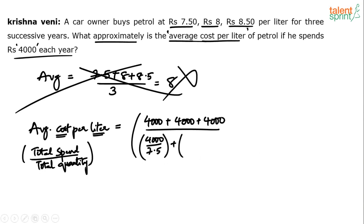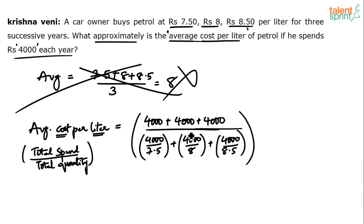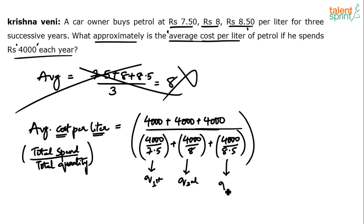In the second year he spends 4000 rupees at 8 rupees per liter, so the quantity is 4000 / 8. In the third year it is 4000 / 8.5. So the formula is: 12000 divided by (4000/7.5 + 4000/8 + 4000/8.5), where each term in the denominator represents the quantity bought each year.